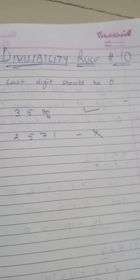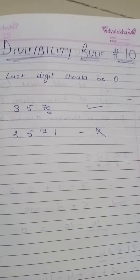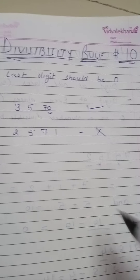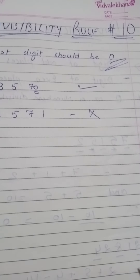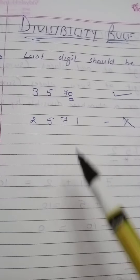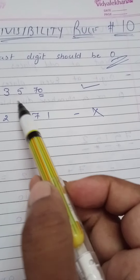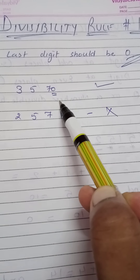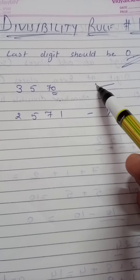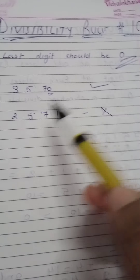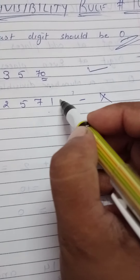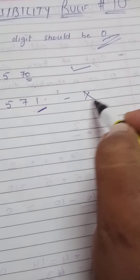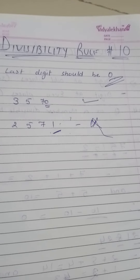The divisibility rule of 10 is very simple: if the last digit is equal to 0, then the number is divisible by 10. For example, 3570 has last digit 0, so it is divisible by 10. Whereas 2571 has last digit 1, which is not 0, hence the rule of 10 does not apply and 2571 is not divisible by 10.